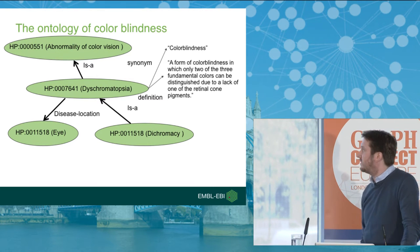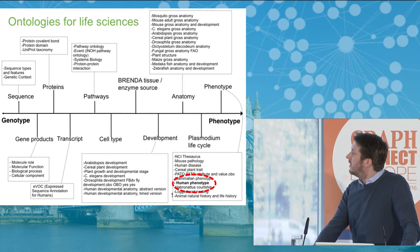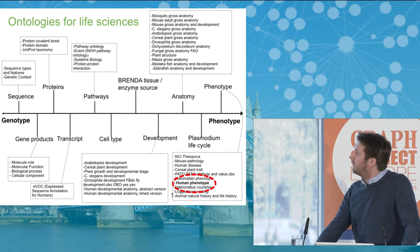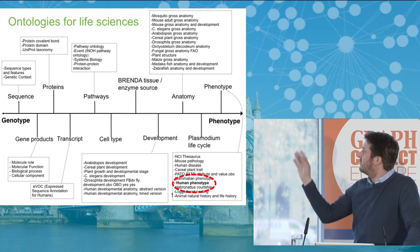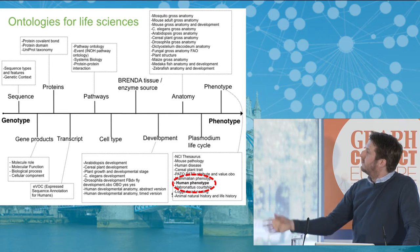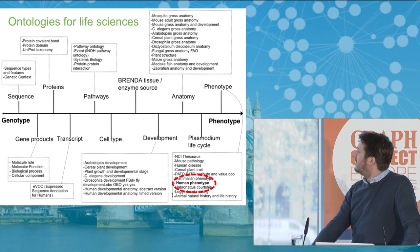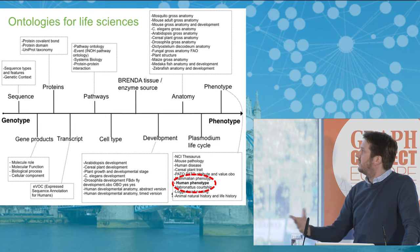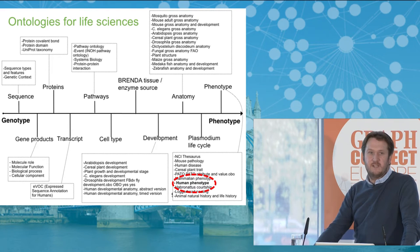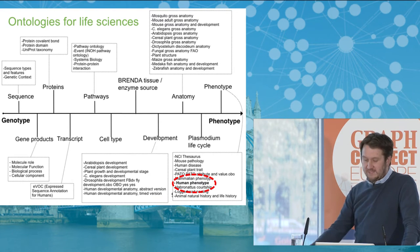We've been very busy in the life sciences over the last 10 years. This gives you an idea of the number of ontologies we now have that basically cover the full domain of biology, going right down from genotypes up to phenotypes. We've got anatomy ontologies, ones for specific types of species, disease ontologies, plant ontologies, and so on. There's a whole load of ontologies out there, and the next challenge is how do we actually work with these in the informatics environment? How do we programmatically access all these ontologies?